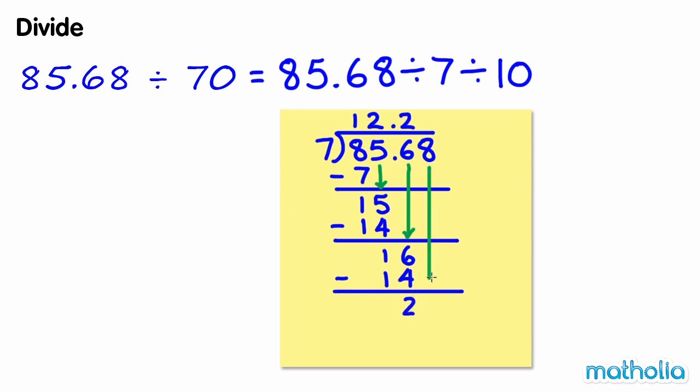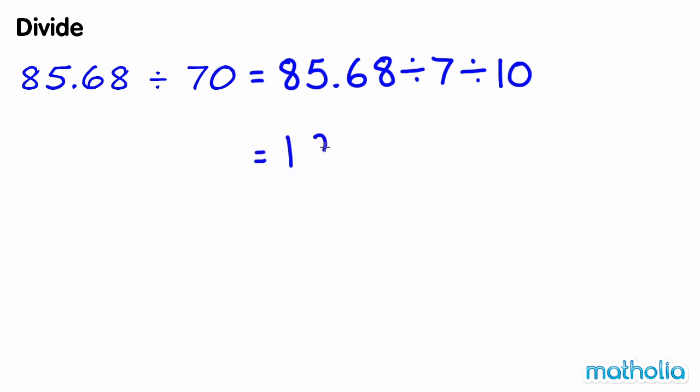85.68 divided by 7 equals 12.24. Divide this by 10 by shifting the decimal point one place to the left. So 85.68 divided by 70 equals 1.224.